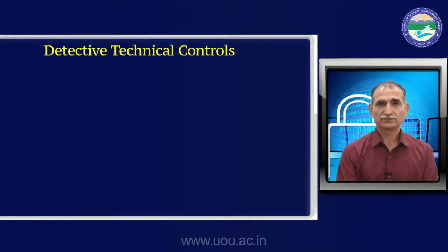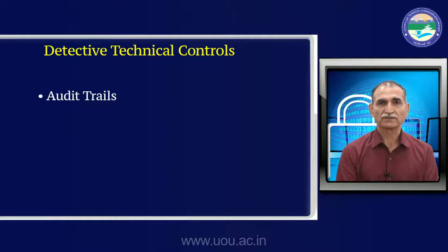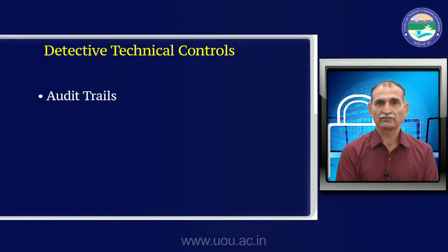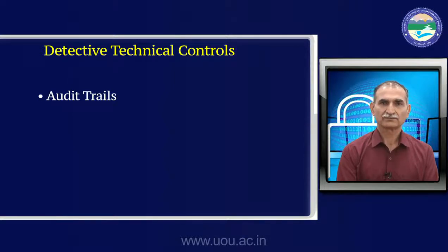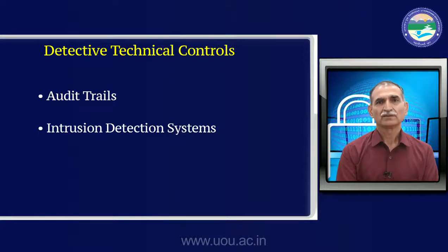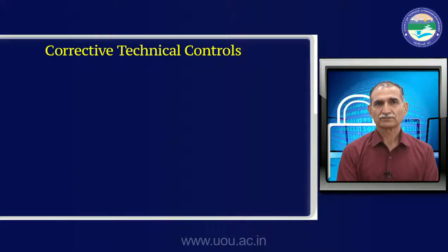What are detective technical controls? Audit trails — whenever any system is on, system logs are created by default. We need to enable this so that even in the worst case scenario, if antivirus and anti-spyware did not detect a signature, an attack can still be caught via the audit trail by backtracking events. Intrusion detection systems are very important so that we can find out whether abnormal behavior of the intruder was detected or not. Corrective technical controls are essential so that when something goes wrong, it can be corrected.